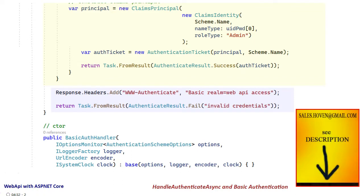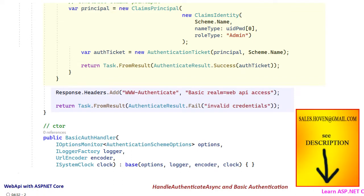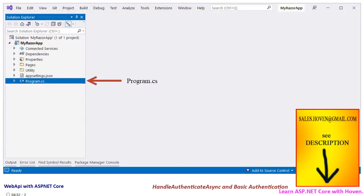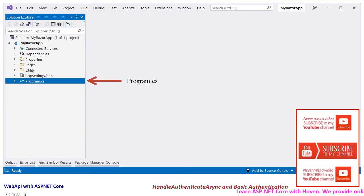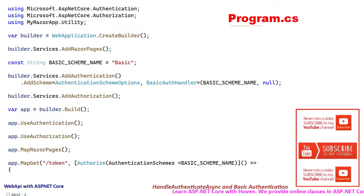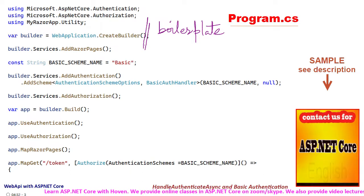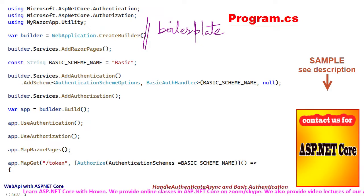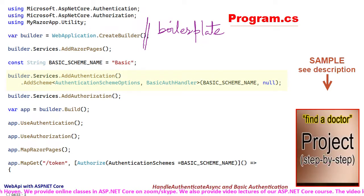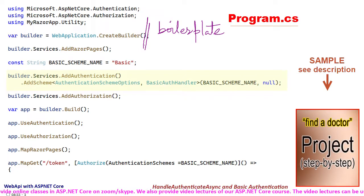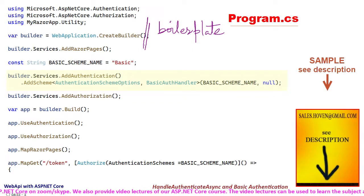This is all we need to do, and now we can examine the program.cs file. Open the solution explorer and locate the program.cs file, double click and open it. The first few lines are the usual boilerplate code. After that we register the authentication services, then we have the addScheme method which connects the BasicAuthHandler class that we added just now.